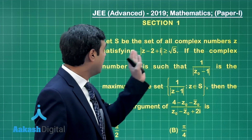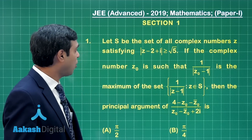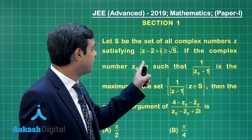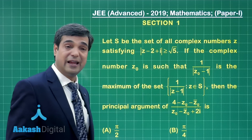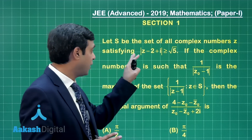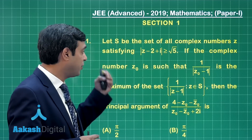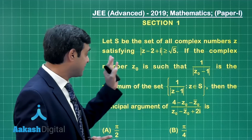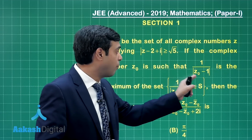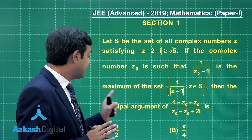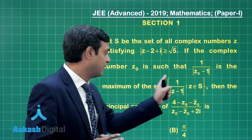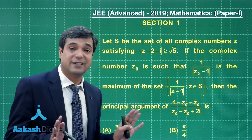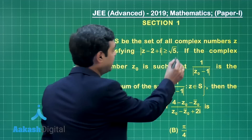The first question is from complex numbers. Let S be the set of all complex numbers Z satisfying |Z - (2 + i)| ≥ √5. We are talking about a circle and its exterior, that is the boundary and exterior. The complex number Z₀ is such that 1/|Z₀ - 1| is the maximum of that set, and we need to find the principal argument of another expression. Let us start this question.